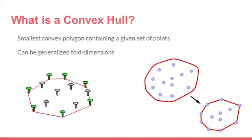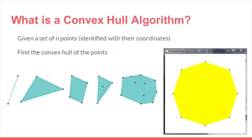So now, a convex hull will be the smallest convex polygon containing a given set of points. This can be generalized to 3, 4, etc. dimensions. Now, a convex hull algorithm is given a set of n points, find their convex hull.